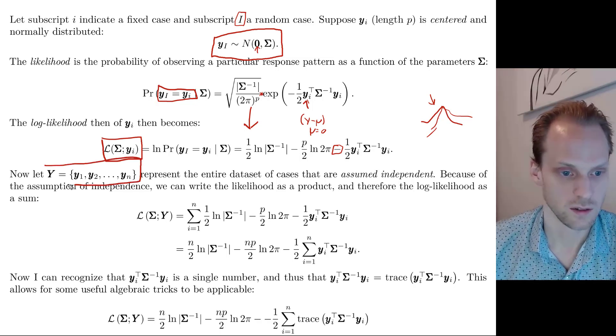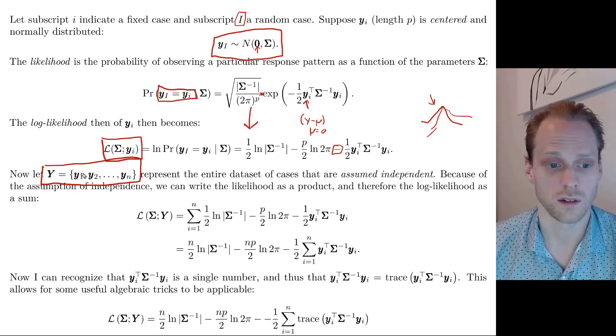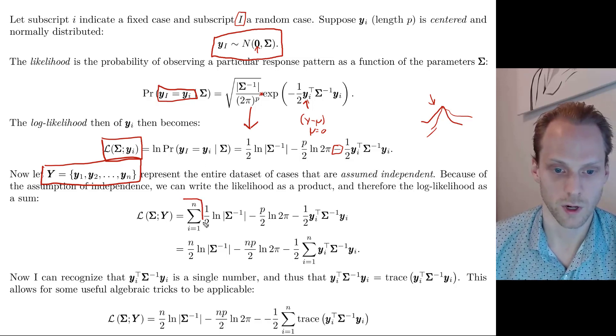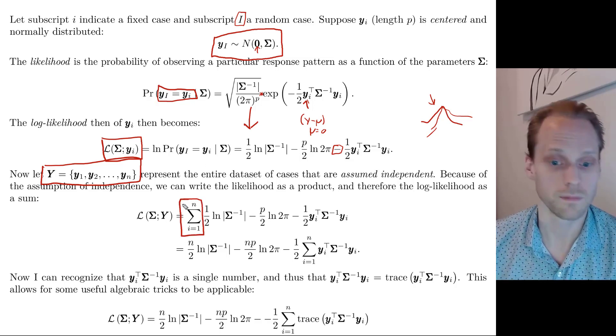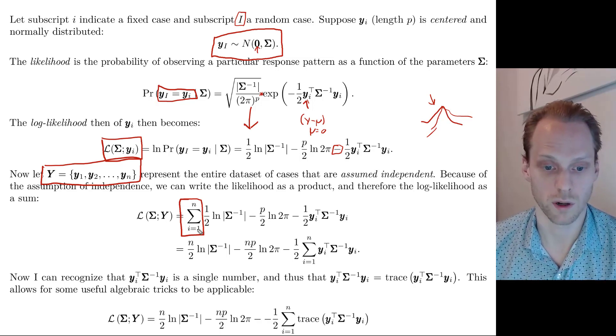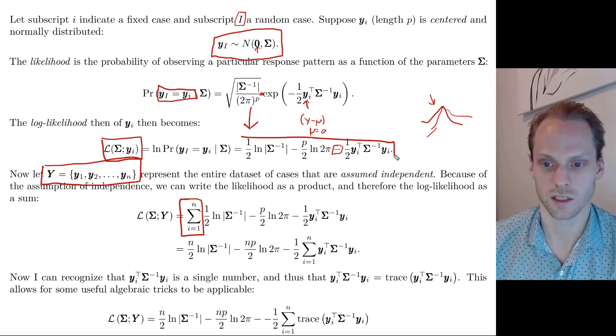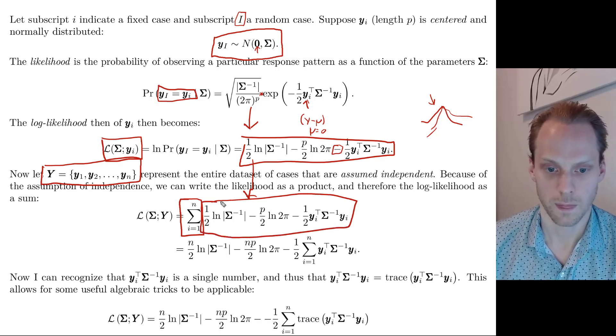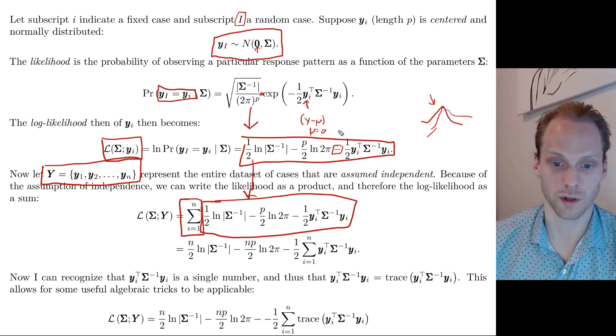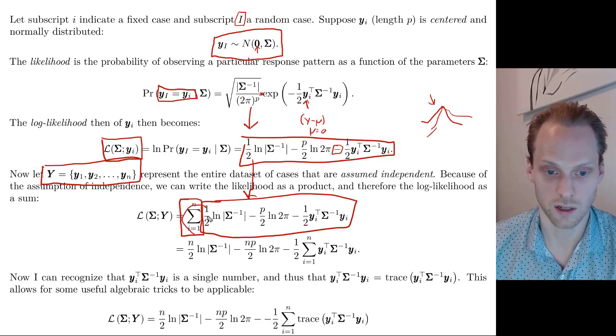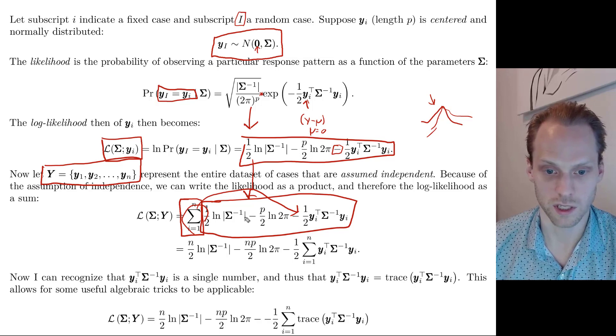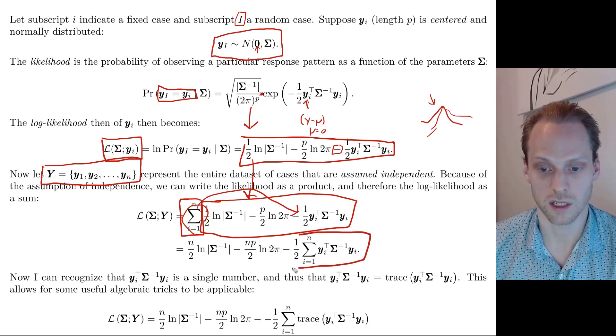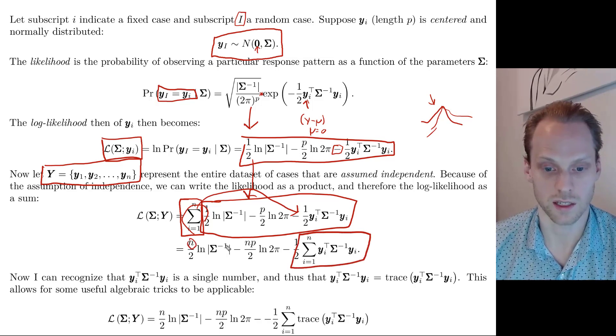And now if you have our entire data set, this is our entire data set, which might just be like, so every row is an observed response pattern. We can simply sum over this for every observed pattern. So we sum for i equals 1 to n over this same expression that we had here. So this is exactly the same as we had here.